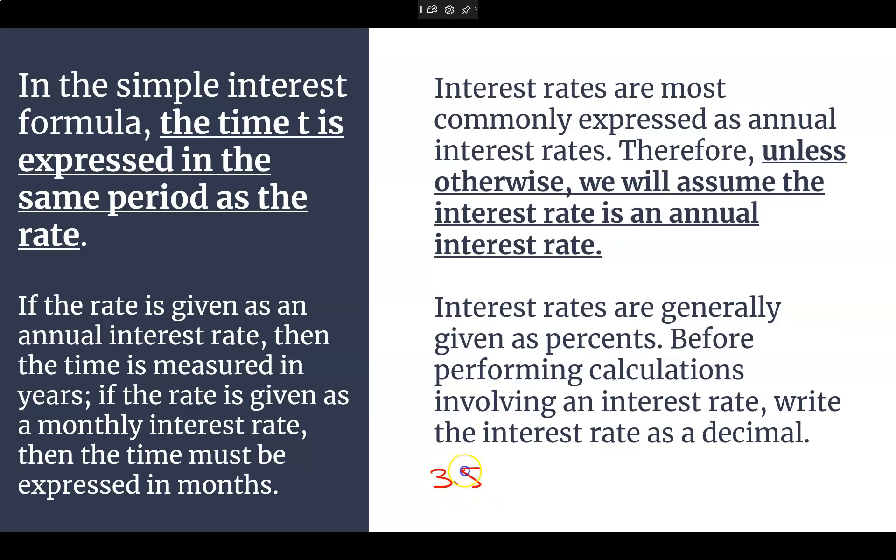So let's pretend it's like 3.5%. To convert that to a decimal, I can take this decimal, move it back one, two spots like that to get 0.035. Or you can take 3.5 and divide it by 100, and you'll get the same thing. Two ways to change our percents into decimals. Unless otherwise, we will always assume that it is annual, and we've got to make sure we change our percents into decimals.